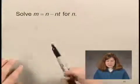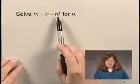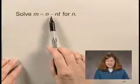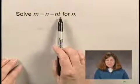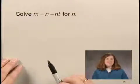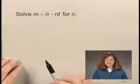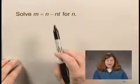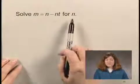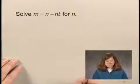Now you'll notice here that there are two terms that contain n — n, and then negative, or the opposite of, nt. Whenever this occurs, there is one key word to remember, and that is the word factor. If you can remember to factor out the variable you're solving for — the letter you're solving for — the next step is usually a little more obvious to see.